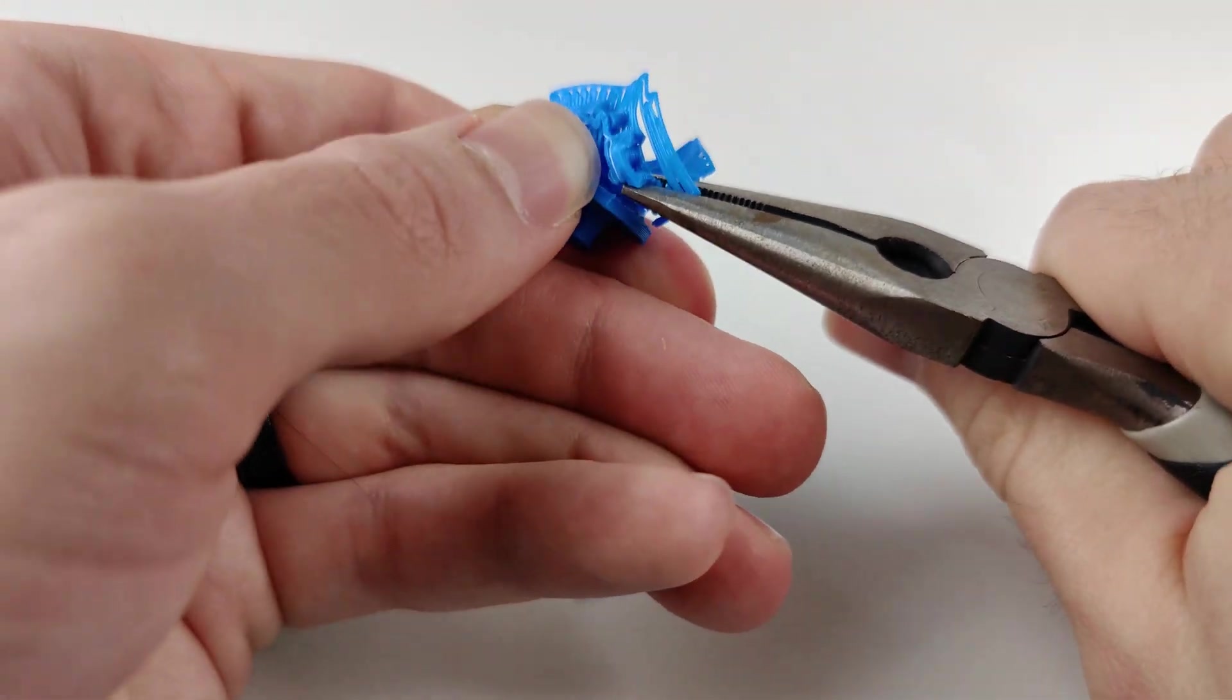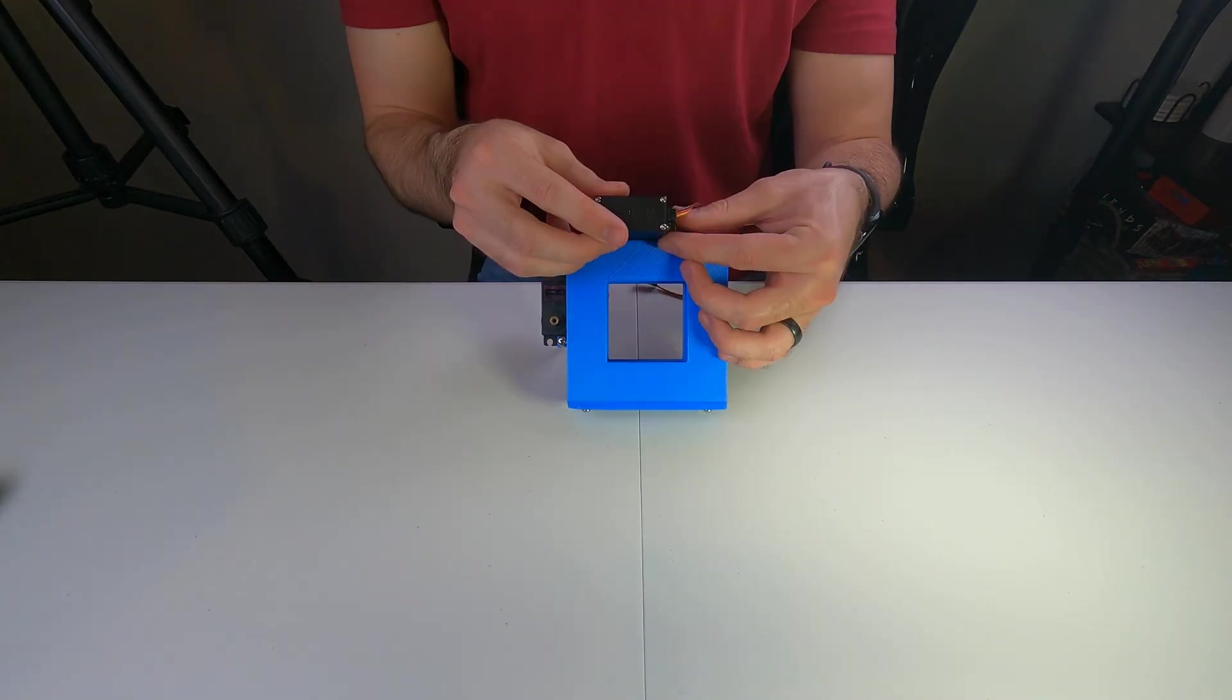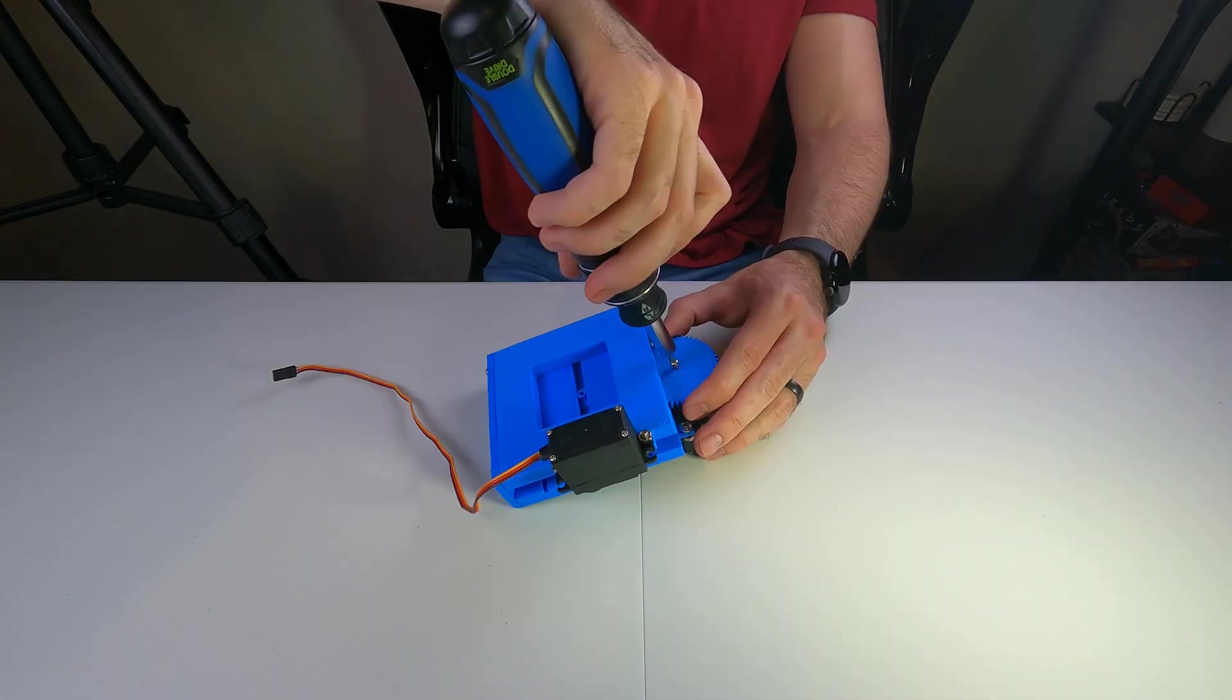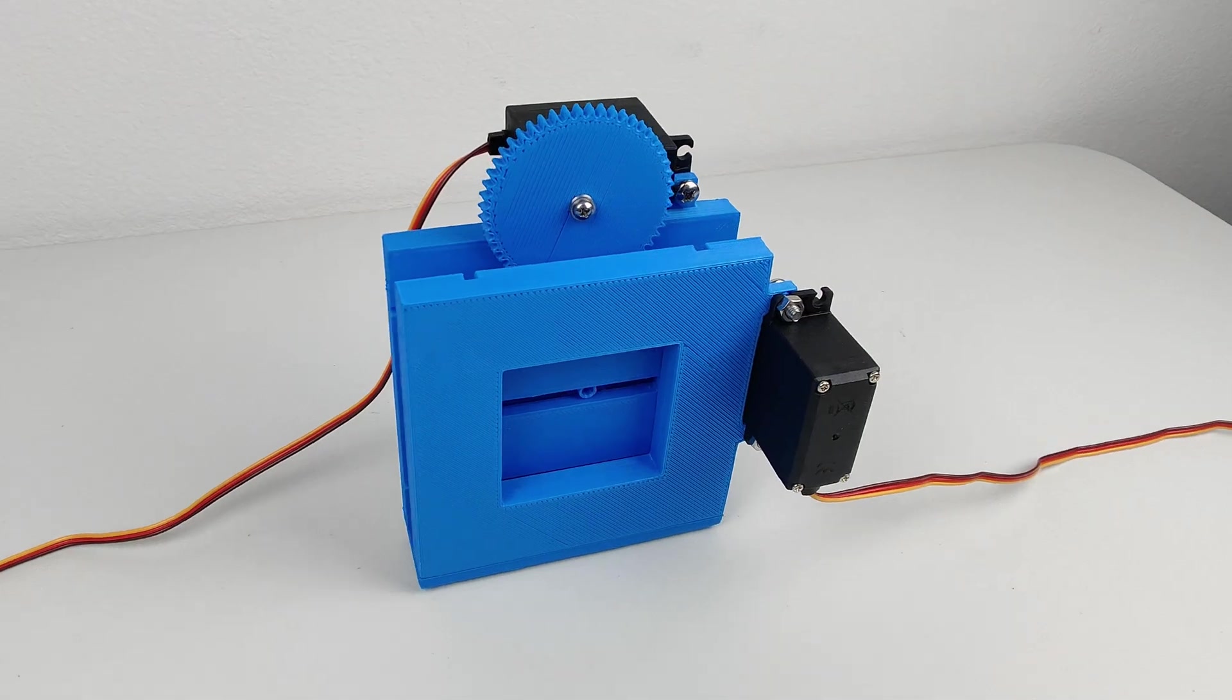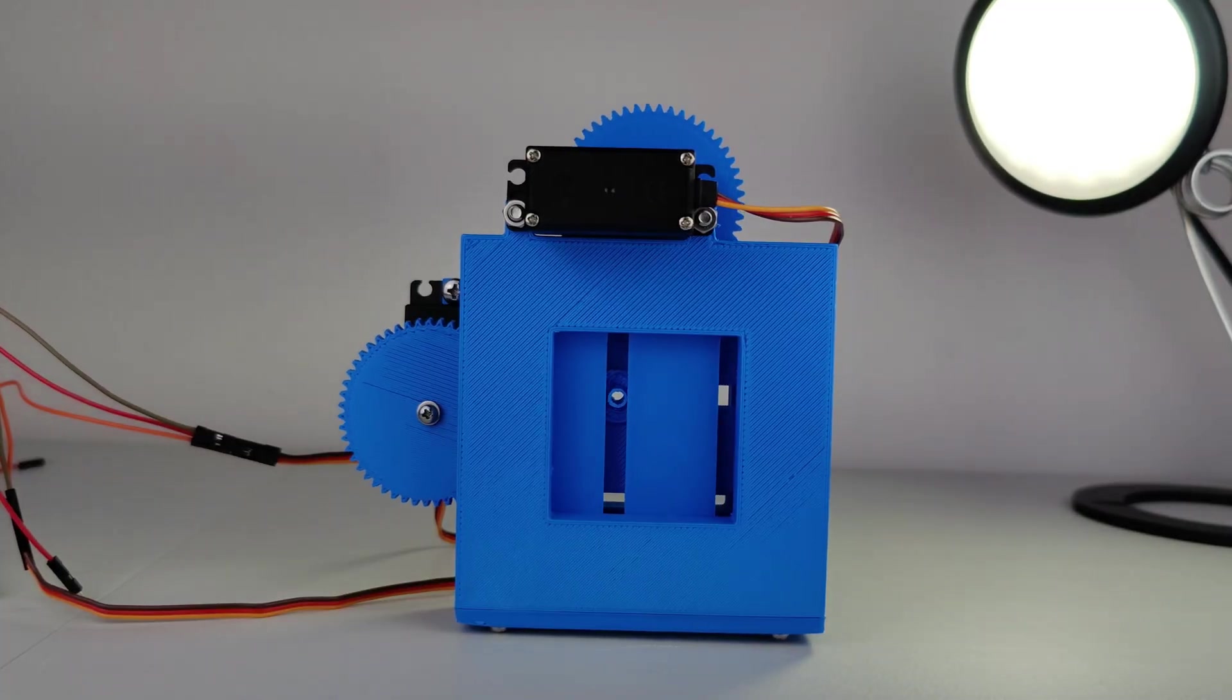I subtracted supports, installed inserts, and mated the mounts. Then I secured the servos, slid sleds into slots, and guided in the gears. I'm really happy with this design. Each axis works well independently, and they even move well together.